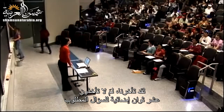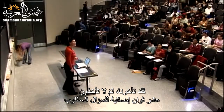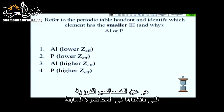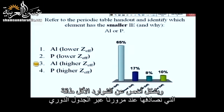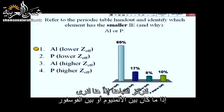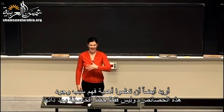All right, it's 12:05, so go ahead and take 10 more seconds on the clicker question today. This is about the periodic trends that we discussed on Wednesday — specifically, as we go across the periodic table, we want to consider which has the smaller ionization energy.